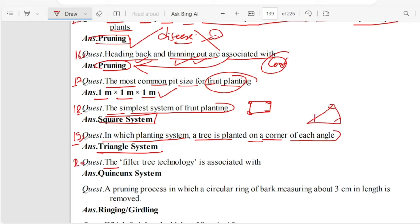Question 20. The filler tree technology is associated with quincunx system. Ringing is a pruning process in which a circular ring of bark measuring about 3 cm in length is removed.